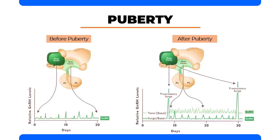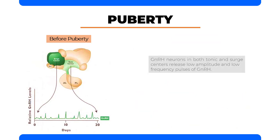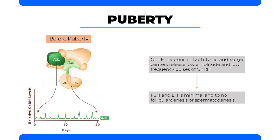Here is a comparison of changes in hypothalamic secretion of GNRH before and after puberty. At the prepubertal phase, the GNRH neurons in both tonic and surge centers release low amplitude and low frequency pulses of GNRH. Consequently, FSH and LH are minimal, resulting in little to no follicular genesis or spermatogenesis. Even though neurons in the surge center in prepubertal females are sensitive to estrogen, they cannot secrete much GNRH because estrogen levels are too low.